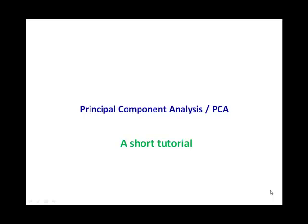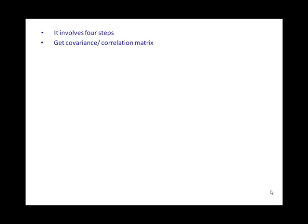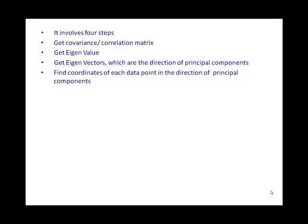Welcome to the 'How to Conduct' series. This time we are going to see how to do principal component analysis. There are four steps: first, get the covariance or correlation matrix from the data; second, get the eigenvalues; third, get the eigenvectors, which are the directions of the principal components; and fourth, get the coordinates of each data point in the direction of the principal components.